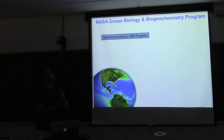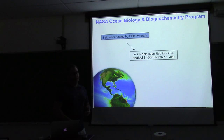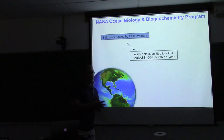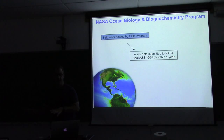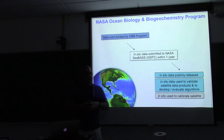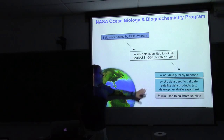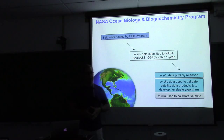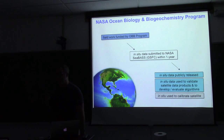Here's an overview of the flow of field data in a NASA ocean color program. You write a proposal, get funded, get ship time, buy instruments, and collect data. Within a year of collecting those data, they get submitted to CBAS — the permanent archive for all data collected under the auspices of this program. These data, paid for by taxpayer money, are then available to the public. We use them, and other groups use them, to validate satellite data products, develop algorithms, evaluate algorithms, and in some cases physically calibrate the satellite.